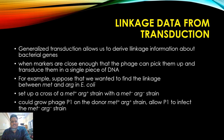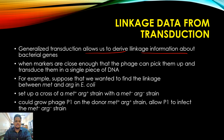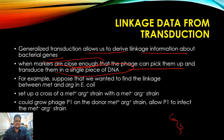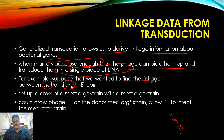Linkage from co-transduction: in the case of any two genes being co-transduced together, this allows us to derive linkage information about the bacteria. When markers are close enough that the phage can pick them up as a single piece of DNA, we can map gene A and gene B. For example, I want to find the linkage between the methionine gene and the arginine gene.